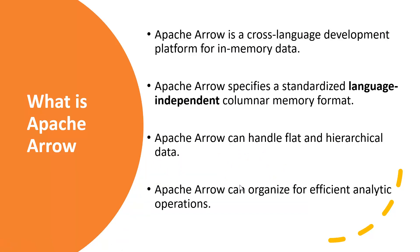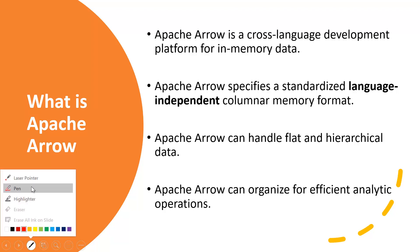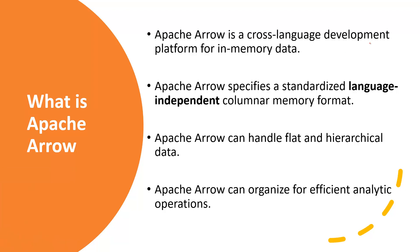Apache Arrow is a cross-language development platform for in-memory data representation. In simple terms, it is an in-memory data format — like Parquet, CSV, text, sequence, and others — except it resides in memory and can work across different languages and development systems. It supports a wide range of languages from C to Java and many more. Another highlight is that Apache Arrow can handle any sort of data, whether flat or hierarchical, represented in formats like XML, JSON, or binary.